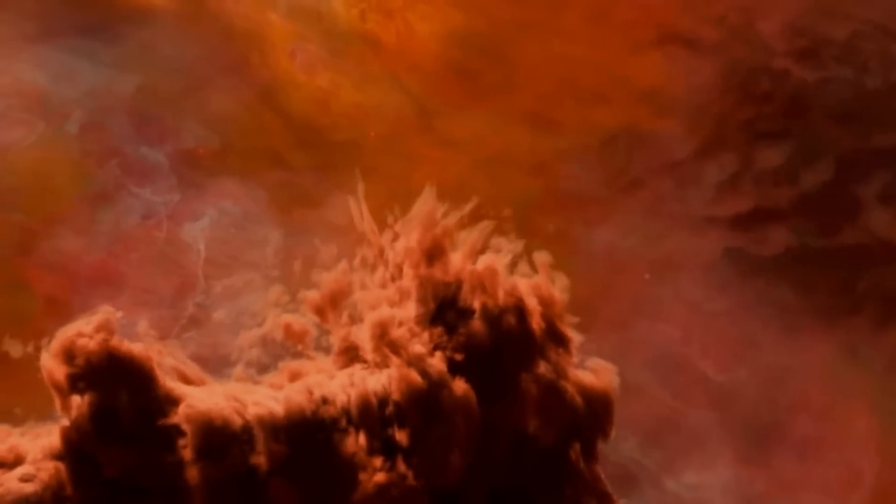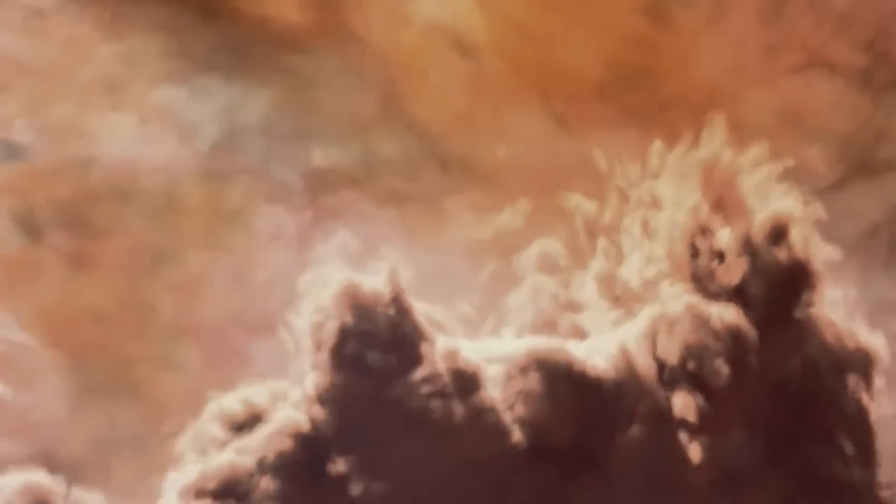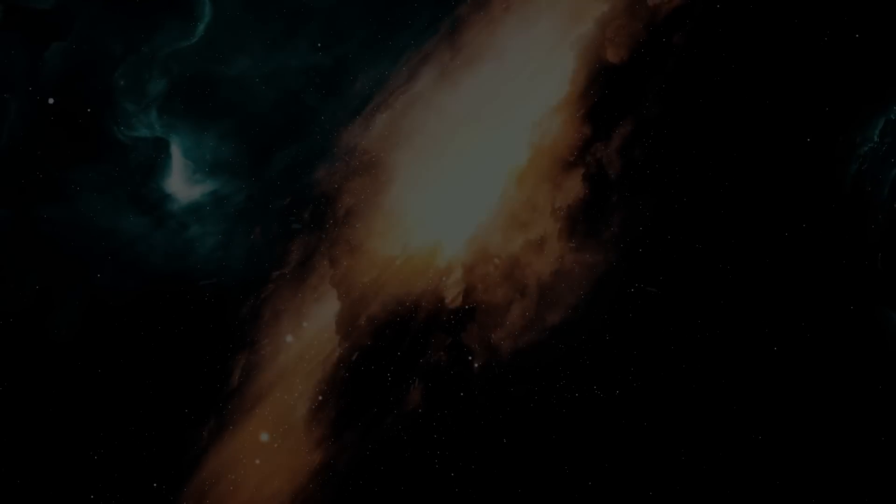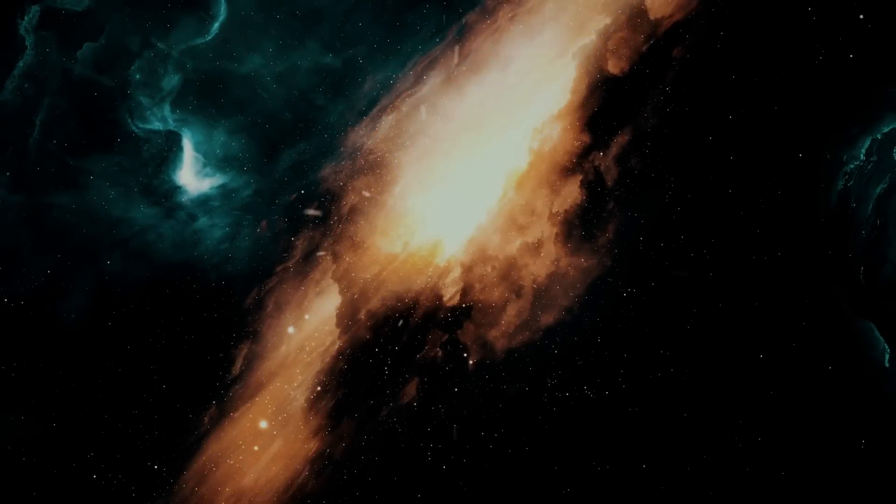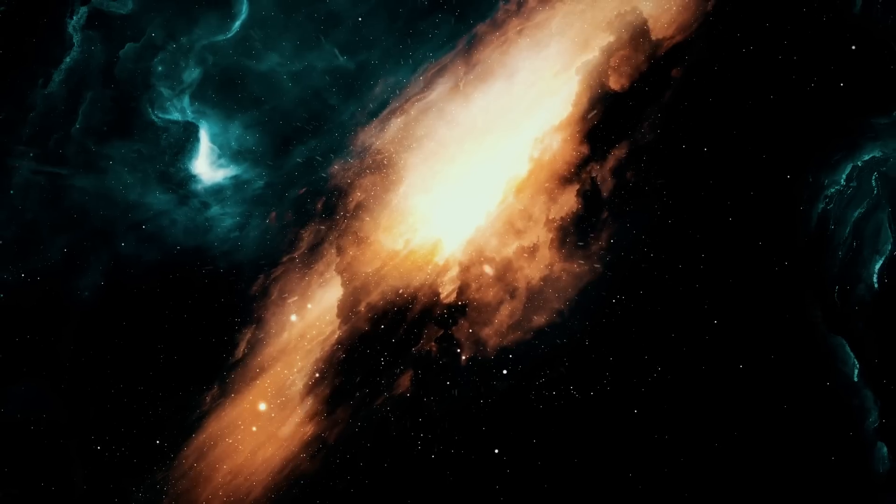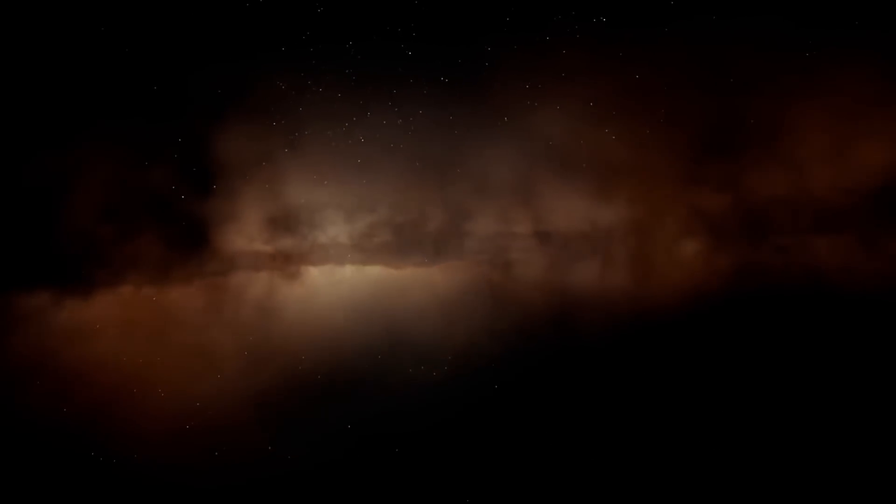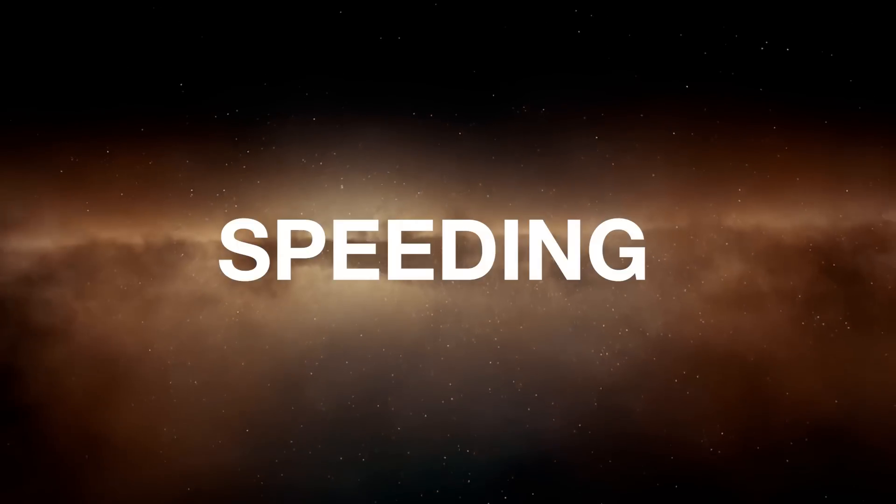After studying these supernovae, they discovered something that would change how we understand the universe. Distant supernovae were dimmer than they expected. Why does this matter? Well, if the expansion of the universe was slowing down, as we formerly expected, then the supernovae would be brighter. But the fact that they were dimmer meant that the universe's expansion is actually speeding up.